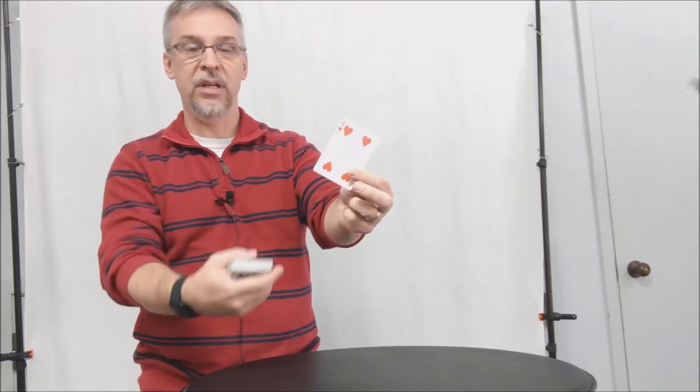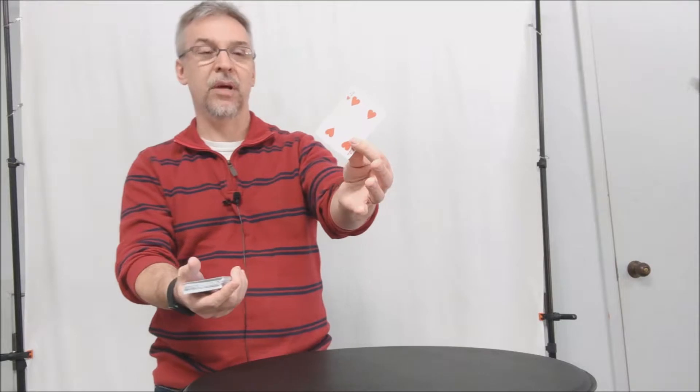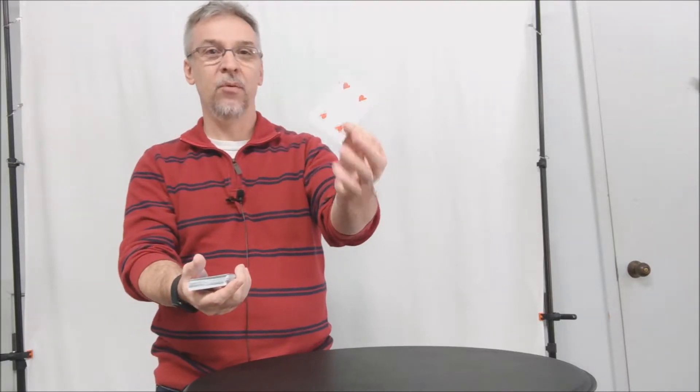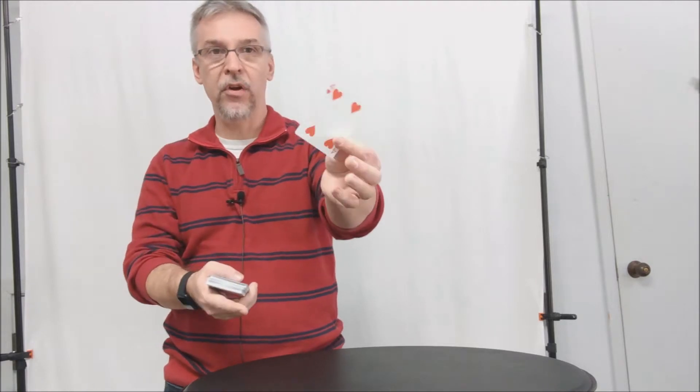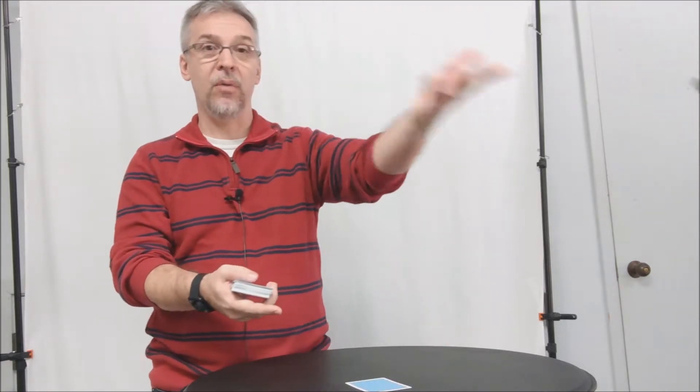They look at it, they know what it is. I don't know what it is right now, but it's the four of hearts. And so at this point, while they're looking at their card, and this is the key, you can tell them to show the card around to some other people.